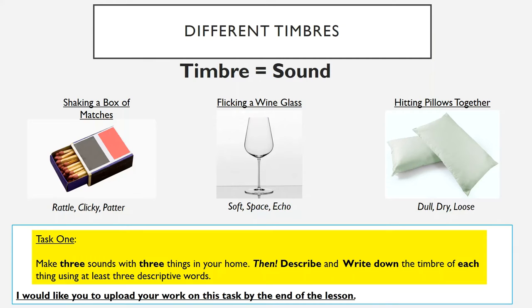So timbre — we looked at this last week, but I want to go into a bit more detail. Timbre equals sound; it's how you describe the sound of something. I've got three things I found around my house: a box of matches, a wine glass, and some pillows. Let's start with shaking a box of matches. You can hear there the matches have a certain timbre — I've described it as rattle, clicky, and patter. Clicky isn't necessarily a proper word, but it effectively describes the timbre. You don't need to use grammatically correct words as long as they're effective in describing the timbre.